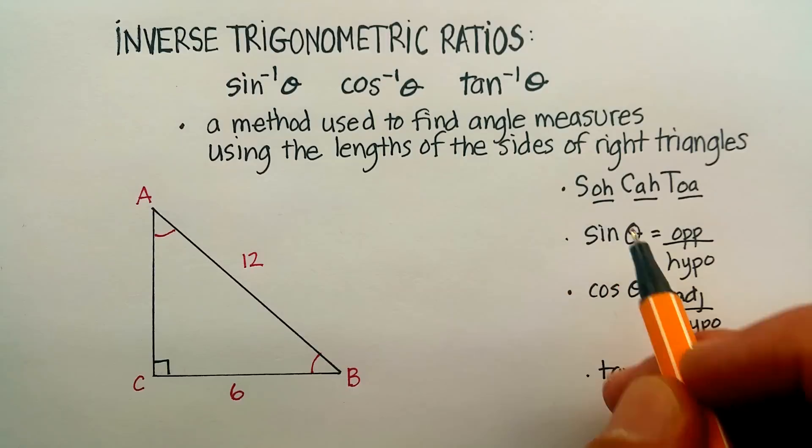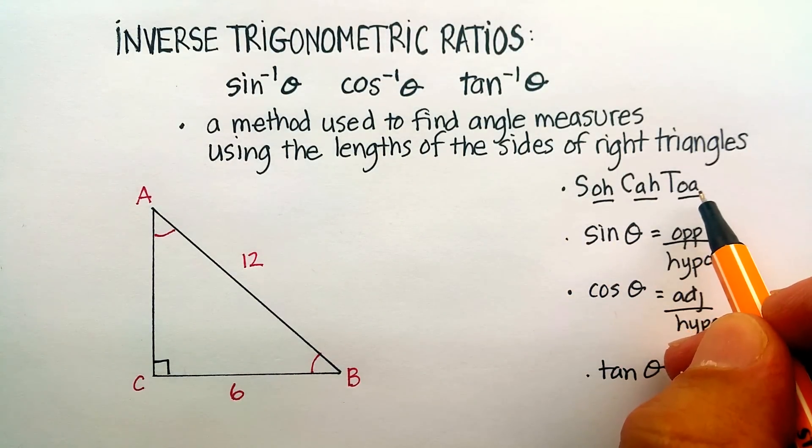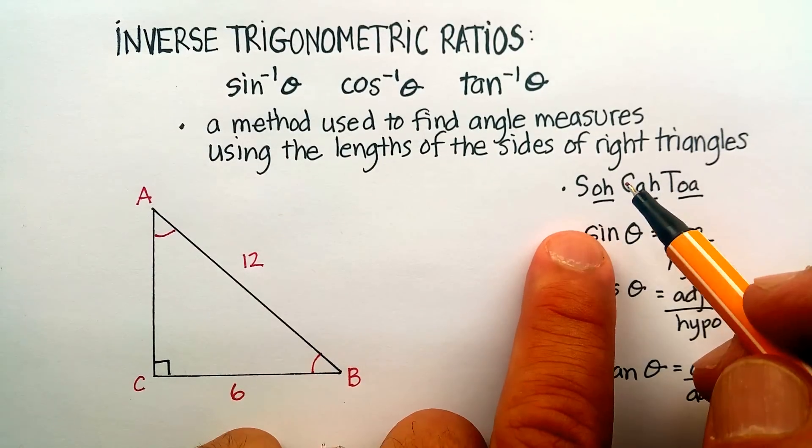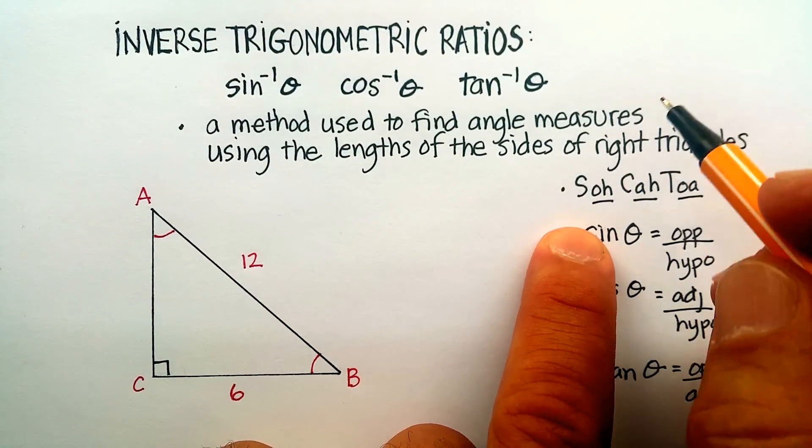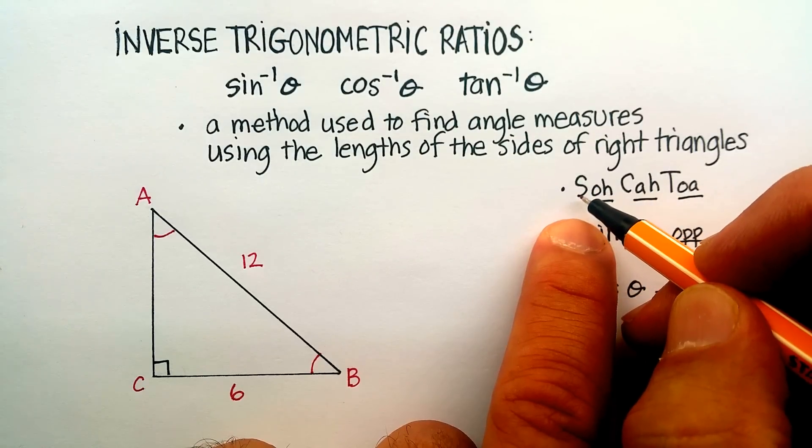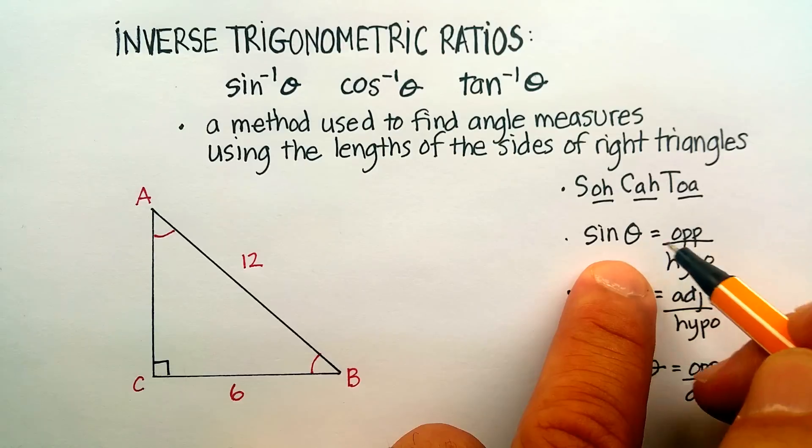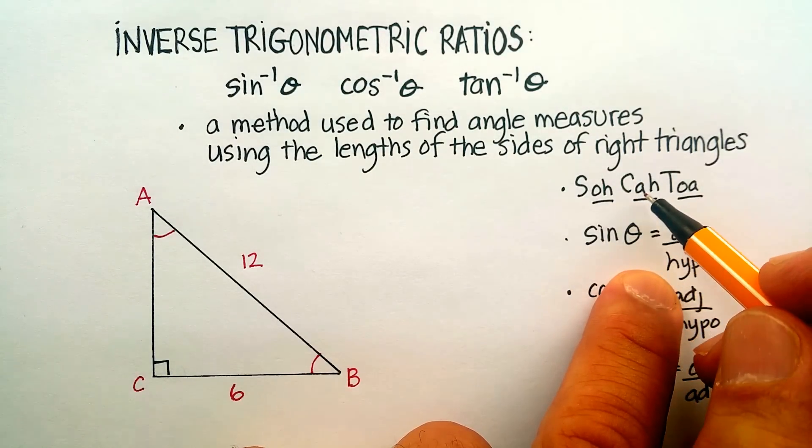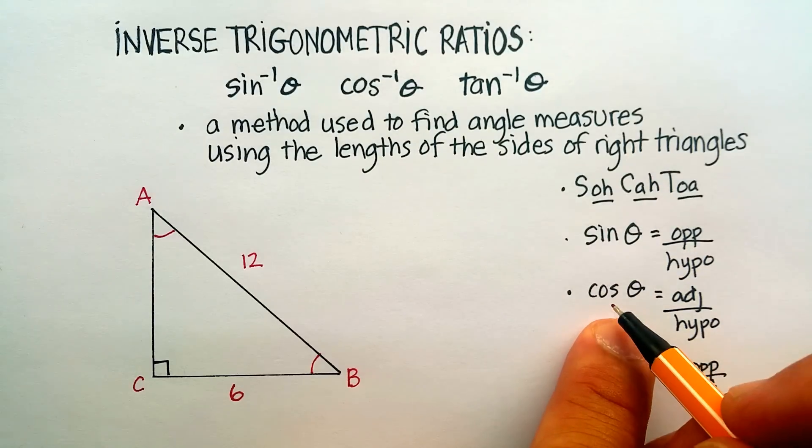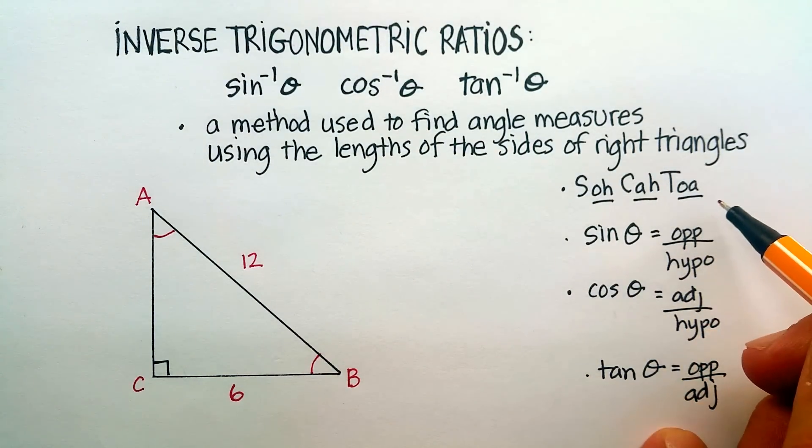Now I'm also going to point out again, please memorize this word, Sohcahtoa, because it really does tell you what each one of these functions means or these ratios, so that we know that sine is opposite over hypotenuse, cosine is adjacent over hypotenuse, and tangent is opposite over adjacent.